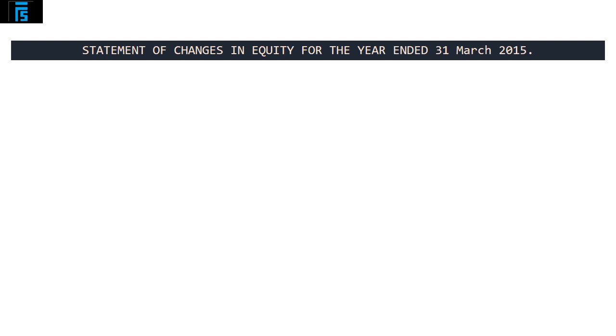Let us begin with the statement of changes in equity, which for the purposes of the F7 exam should once again take on a standardized format. Always make sure to start with the heading. This is the Clarion Statement of Changes in Equity for the year ended 31st March 2015.